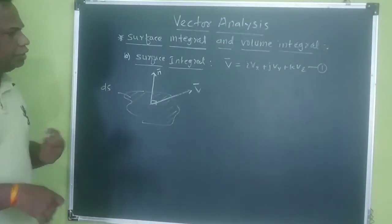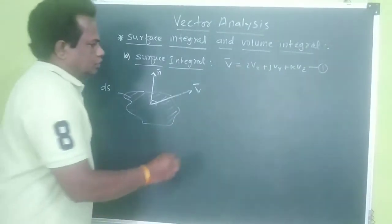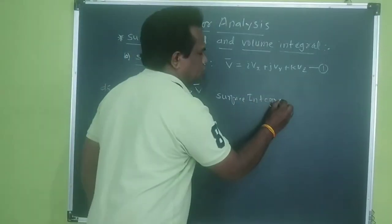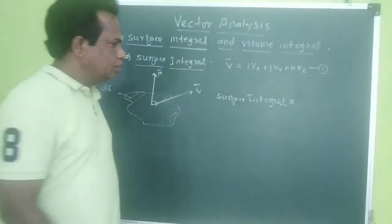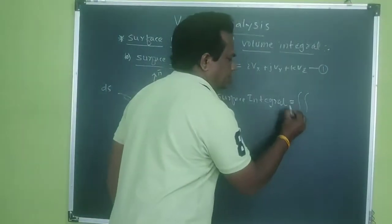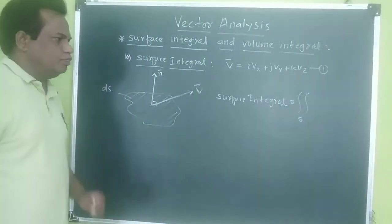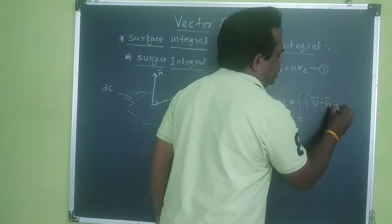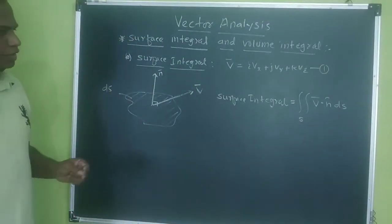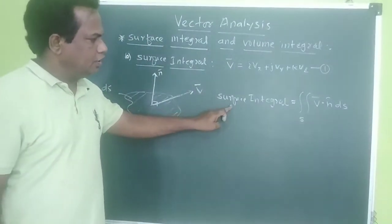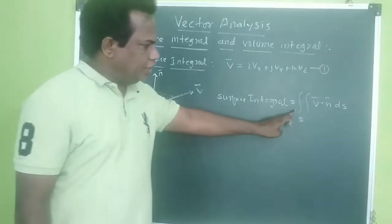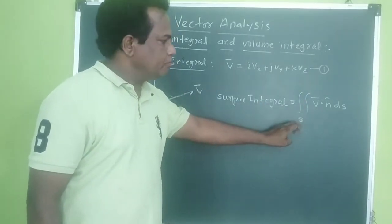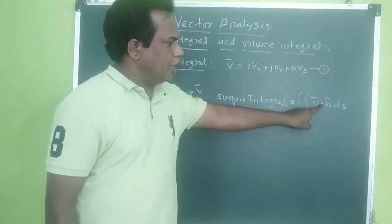Now we are going to define the surface integral. The surface integral is given by double integration over surface area S of V̄ dot N̂ dS. So the surface integral over surface area S is equal to the double integration over surface area S of V̄ dot N̂ dS.